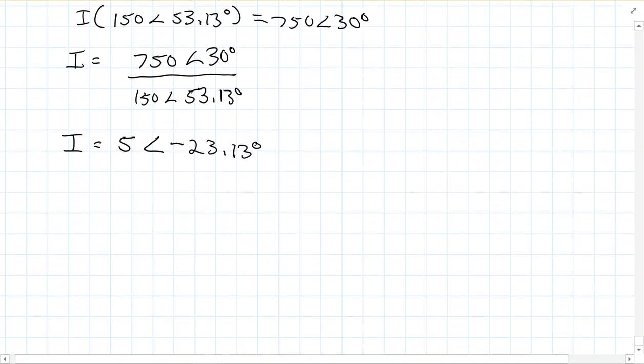And then, of course, we want to write this as my steady state solution. So this would be 5 cosine. Now remember, frequency never changes. 5000 t minus 23.13 degrees. And so that would be my final, and I should write units here, amps. And that would be my final answer.